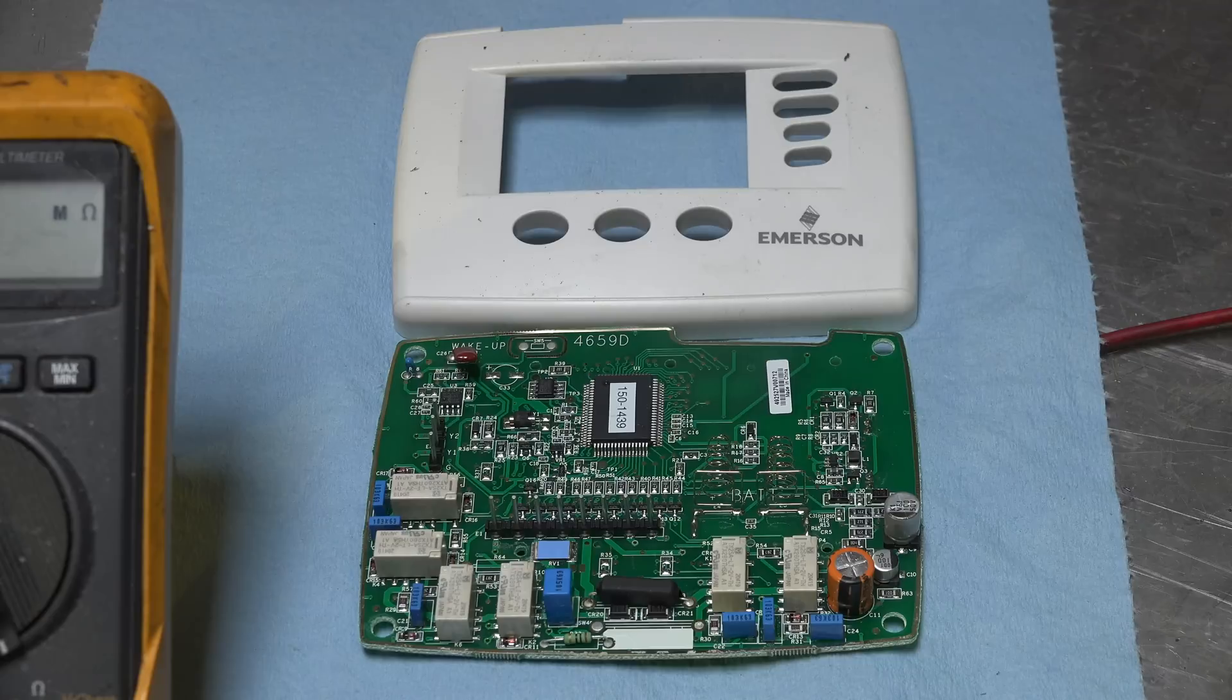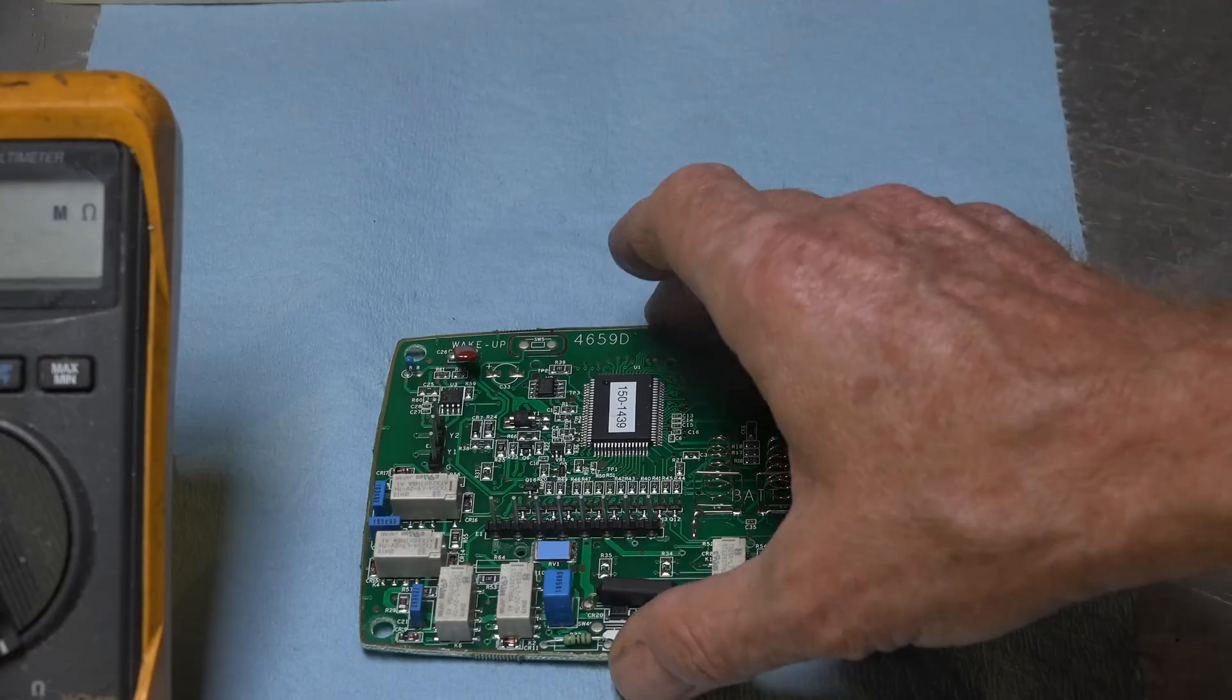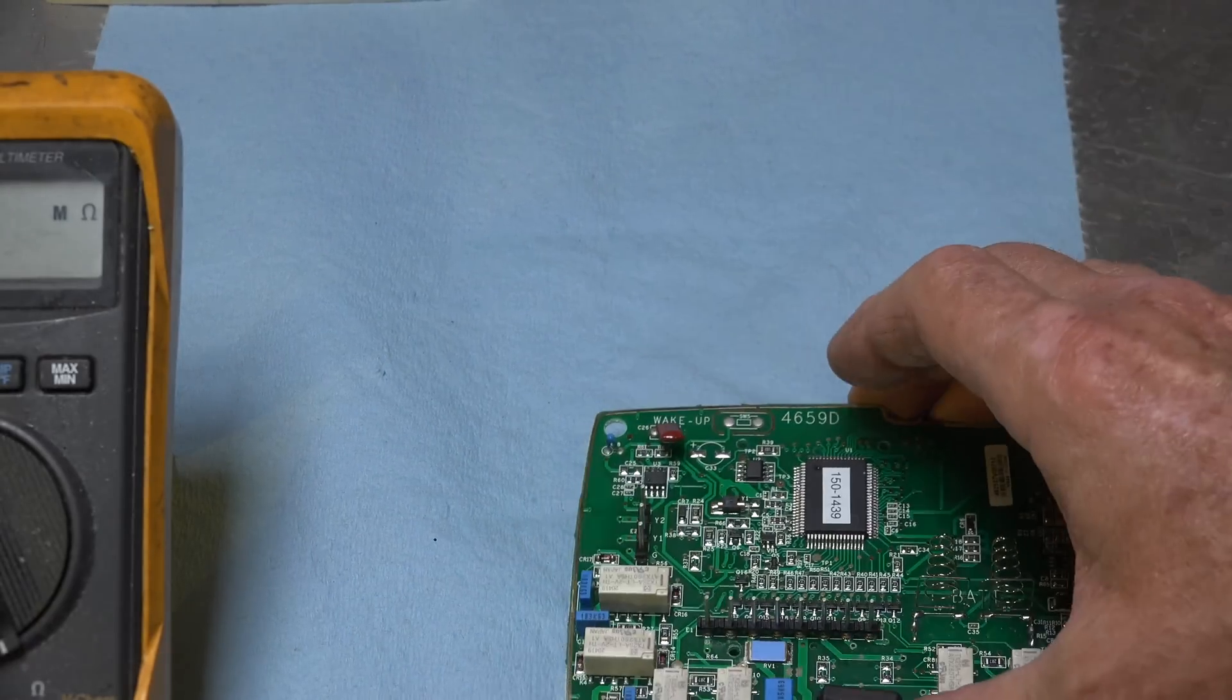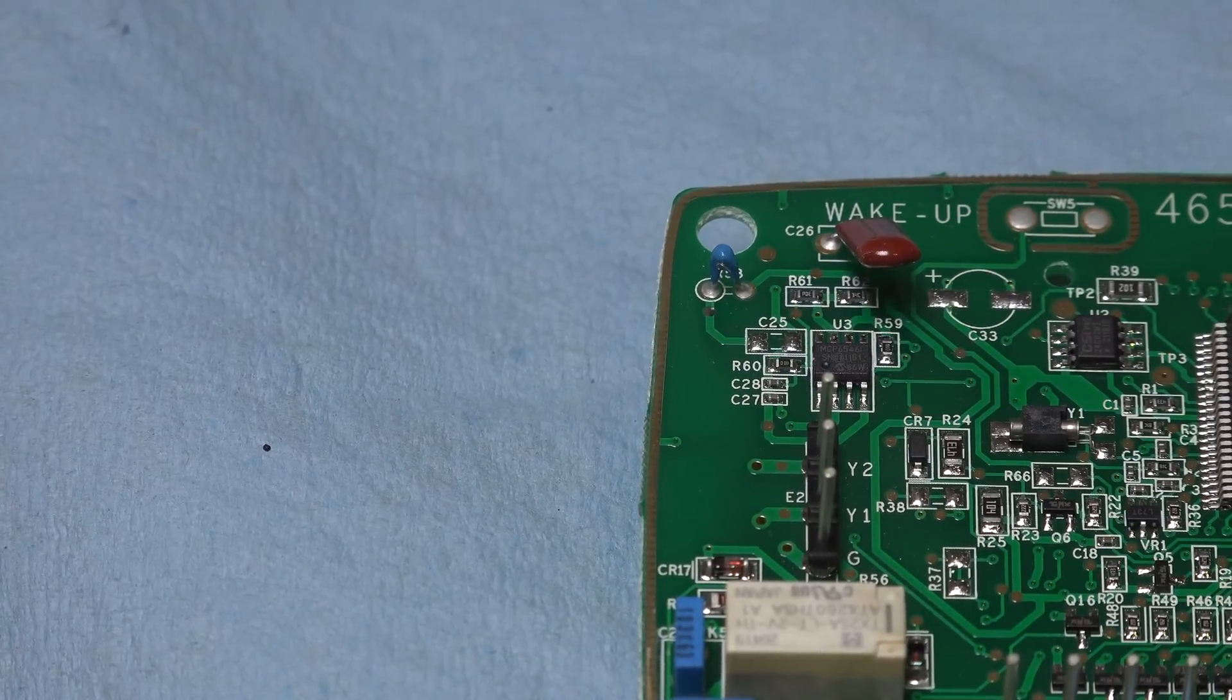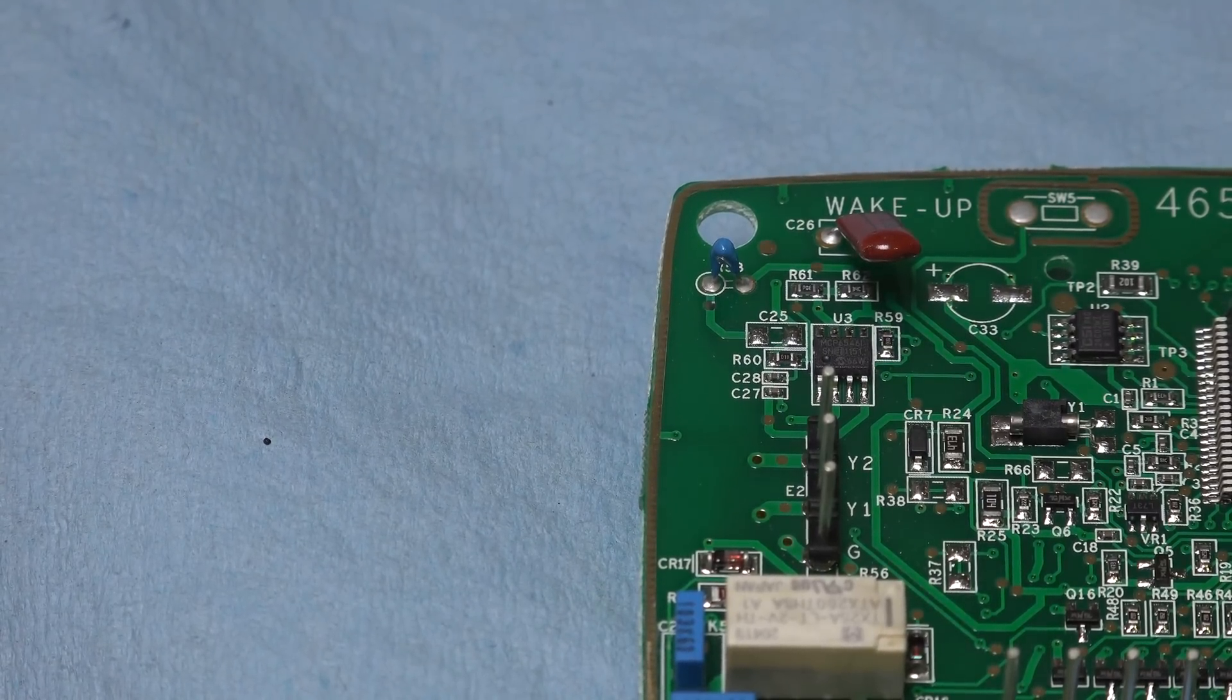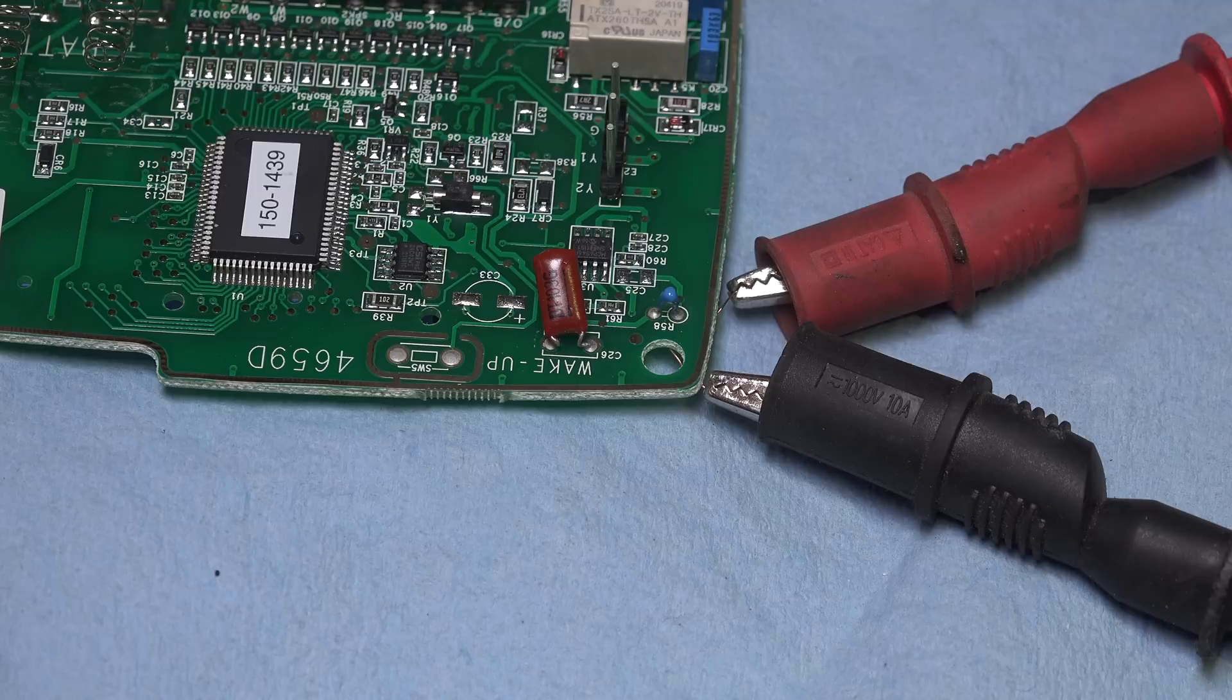Now here we have the White Rogers thermostat, and you got to look pretty close on this one to find the thermistor. But if you look close, and I'll see how close we can get to this thing. Okay, there we have up there in the left corner, you can see the thermistor right there.